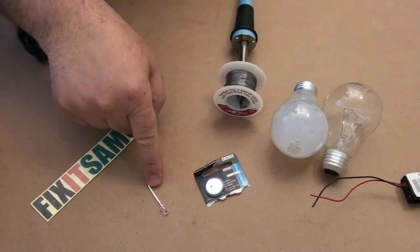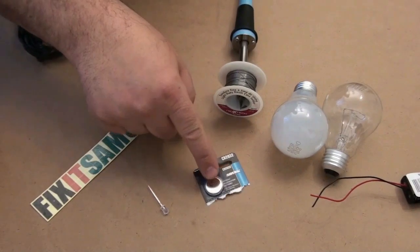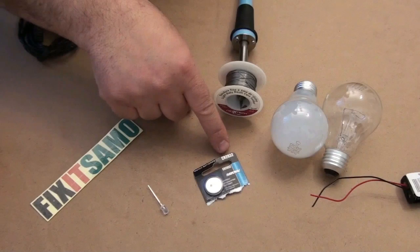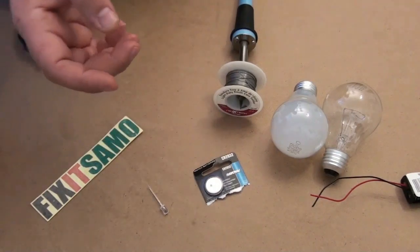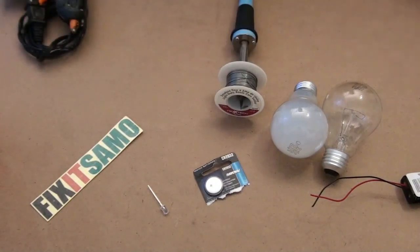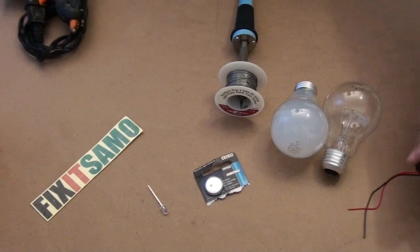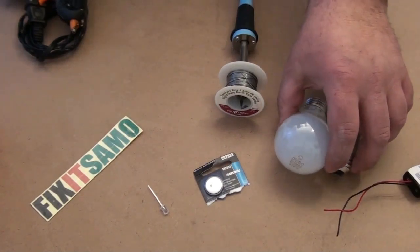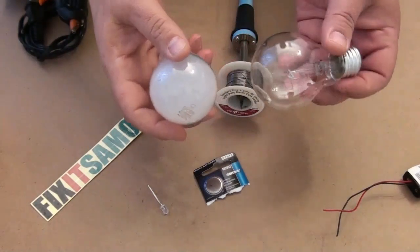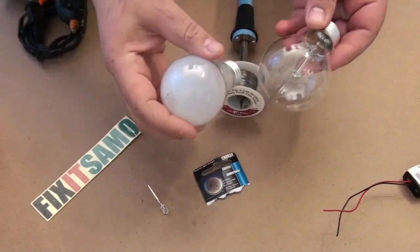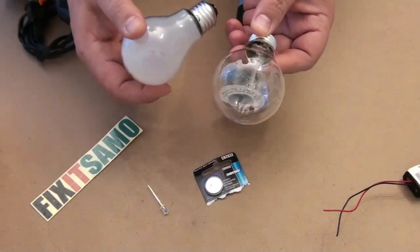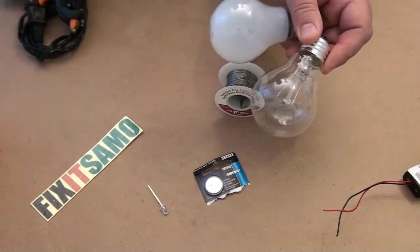...an LED light, 3 volt. We're going to need two batteries, 3 volt CR2032, or you can use any 3 volt you want. Some solder, electrical wire, and two light bulbs. You can use the transparent one or you can use this one. All right, so that's it. Bear with me, we're going to show you the steps.